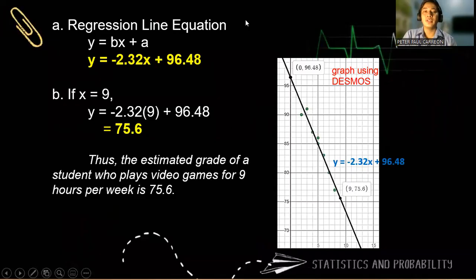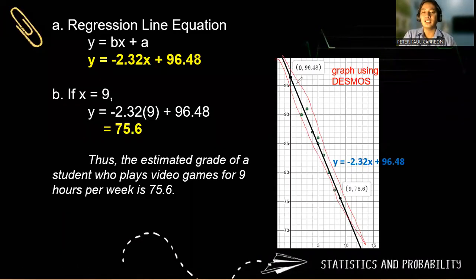So observe the trend line. As I told you, it will lean to the right because our slope is negative 2.32. So therefore, substituting the values for the regression line equation, we have y = bx + a, y = -2.33x + 96.48. Simply substitute those values.